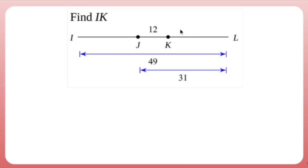So let's see what I know. I'm supposed to find IK. I'm supposed to find from here. Let's figure 12, but I don't know KL. But I do know that JK plus KL is 31, which means if I want to find KL here, I can do 31 minus 12. 31 minus 12 is 19.